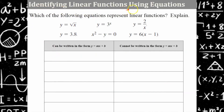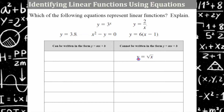Now we're going to identify linear functions using equations. We have six equations and we're trying to determine whether or not they represent linear functions — as easy as asking: can it be written in slope-intercept form? Our first one is y equals the square root of x. This cannot be written in the form y equals mx plus b because of the square root sign, and you cannot have any variable with an exponent greater than or less than one. So this is not a linear function.